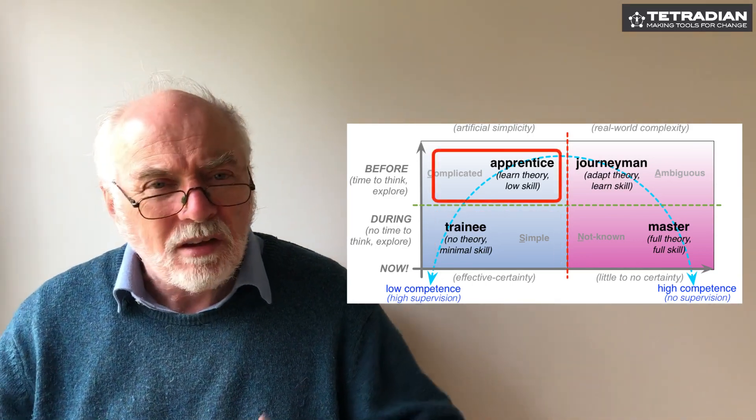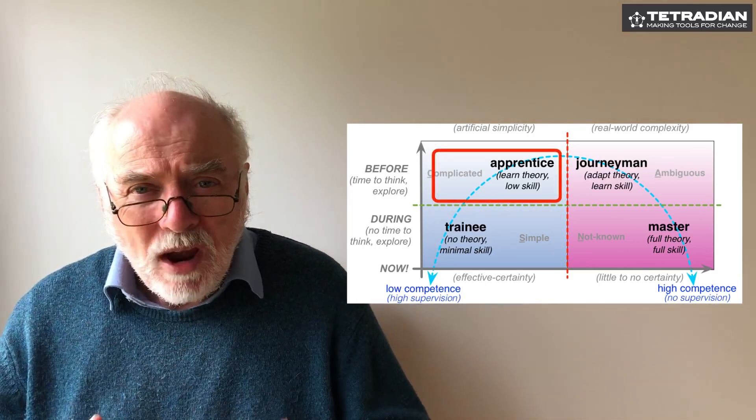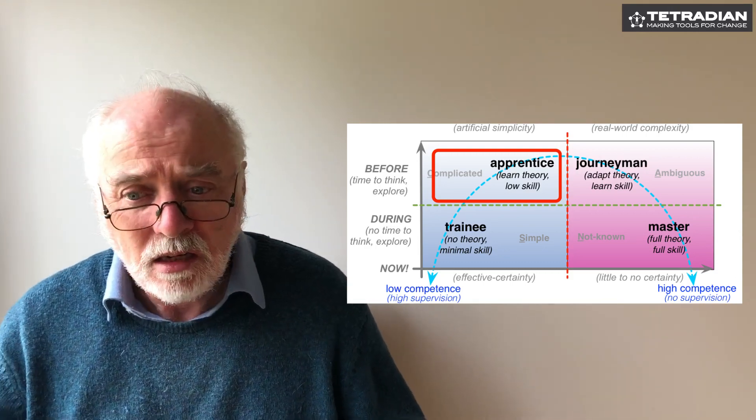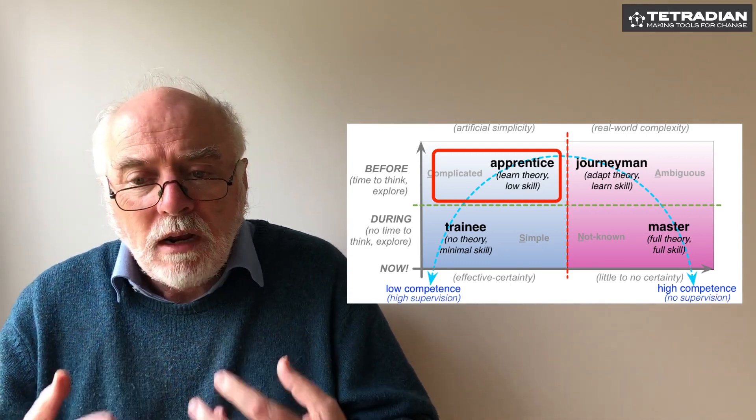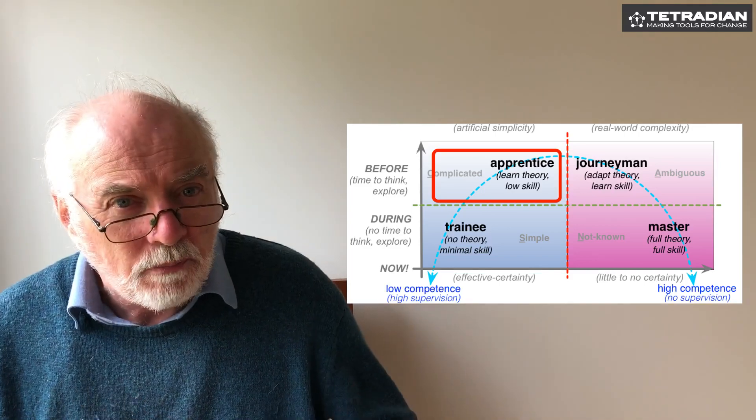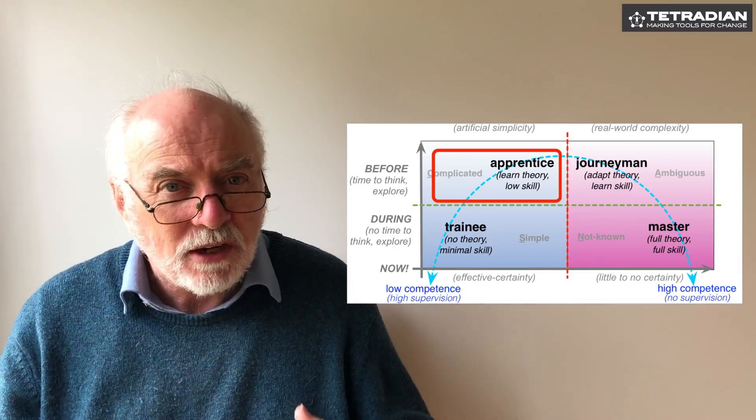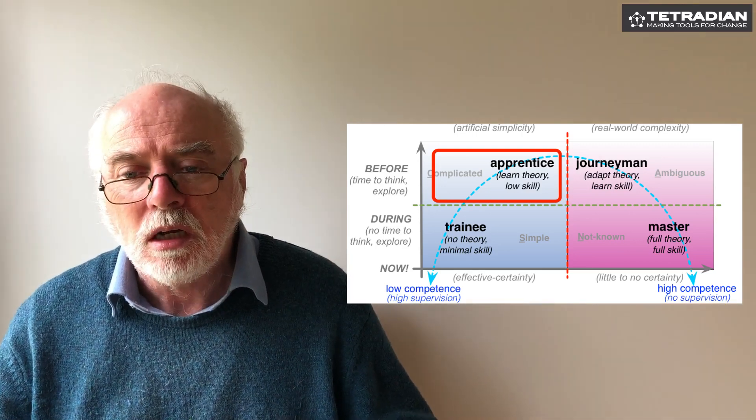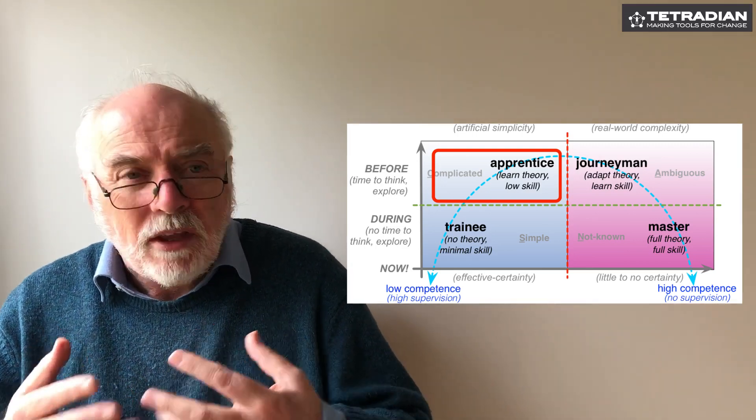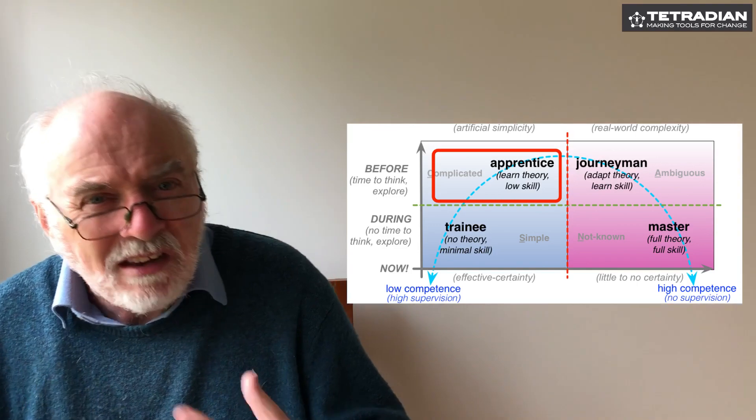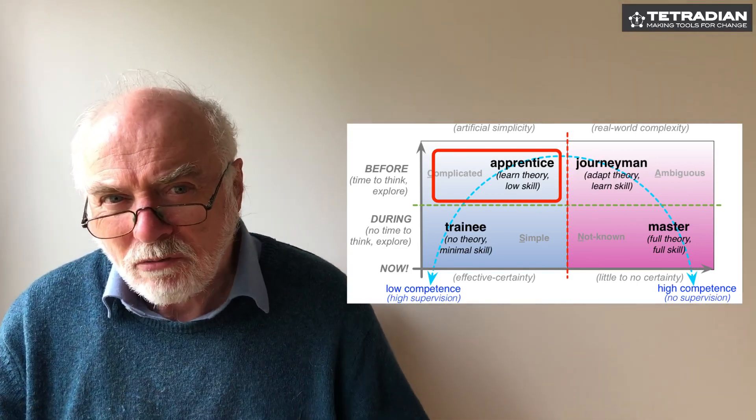An apprentice is focusing their attention away from the point of action because they're learning theory, they're learning rules. They're still low skill rather than minimal skill. They're not at the point of action when they're doing that part of the work. And as I said, they're following extended rules, they're more theory than just rules.